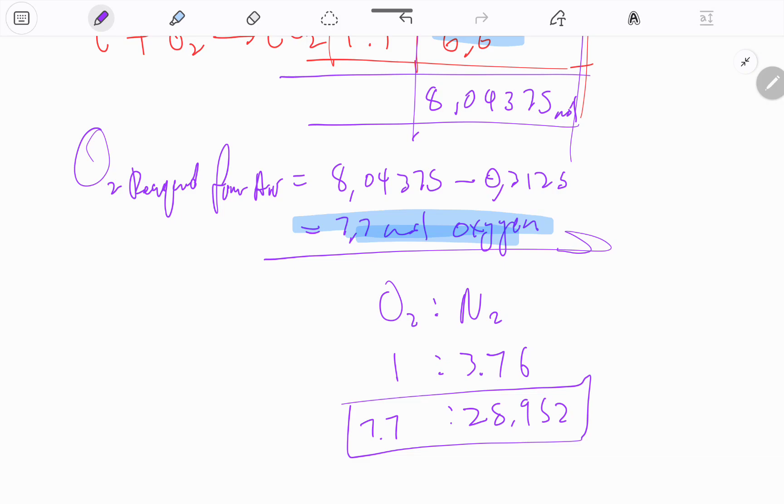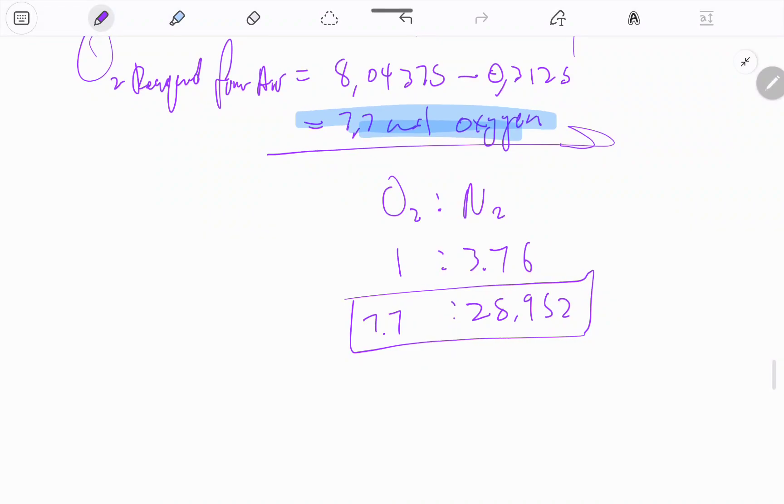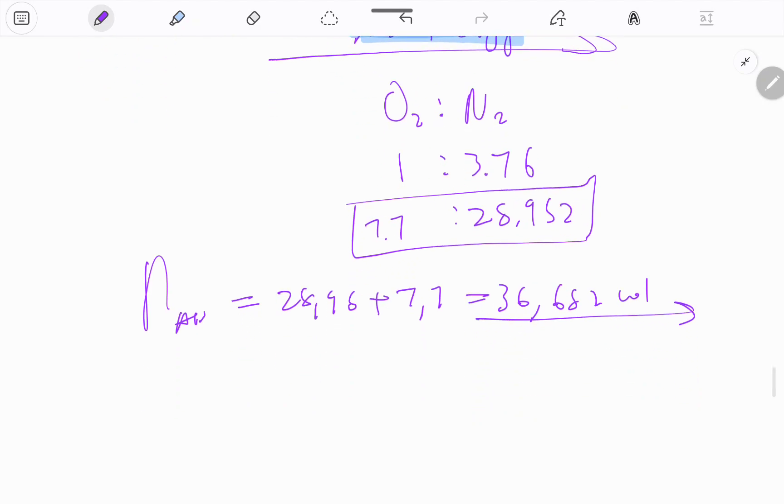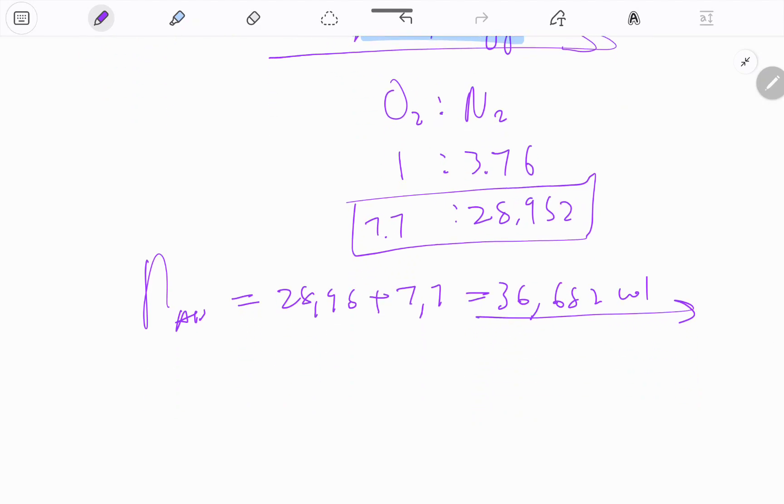I'm going to have 28.952 moles of nitrogen given that we have 7.7 moles of oxygen. So now we can find the number of moles of air, because air is literally made of 21% oxygen and 79% nitrogen.